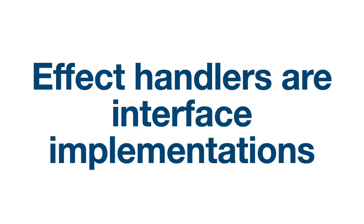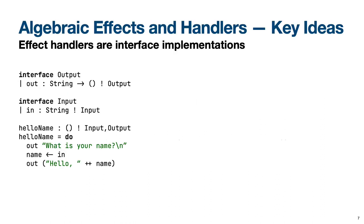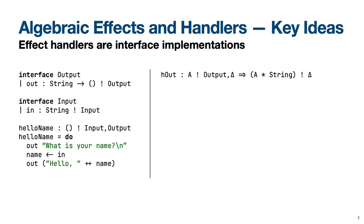The second attractive modularity property of algebraic effects and handlers is that effect handlers let us implement each effect independently from other effects in a way that we can easily combine these implementations. For example, here is a program that uses an input effect and an output effect. The program first outputs a string asking for a name, then calls the operation representing receiving an input, and finally prints hello name. We can run the program provided we first implement and invoke handlers for the effects that the program uses.